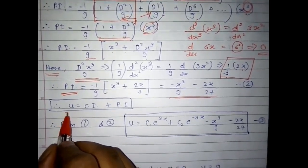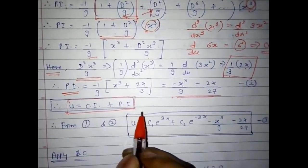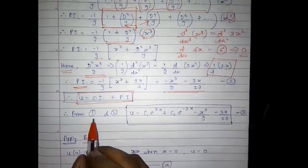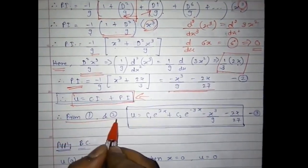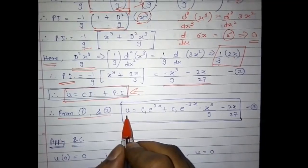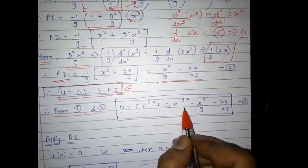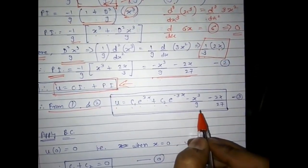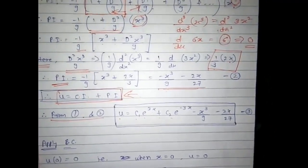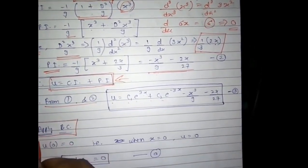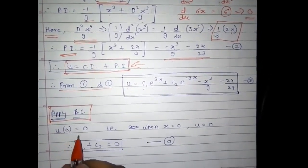The general solution is u = CF + PI. Substituting the CF and PI, from equations (1) and (2): u = c₁e^(3x) + c₂e^(-3x) - x³/9 - 2x/27. Now we apply the boundary conditions.